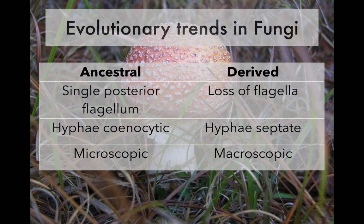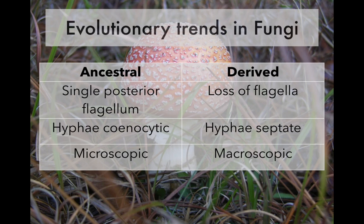There are a number of evolutionary trends throughout the kingdom Fungi. The most ancestral lineages retain that single posterior flagellum that identifies them as members of the Uniconta — which includes choanoflagellates, myxogastrida, and animals. In animals and fungi, that single flagellum points in the posterior direction, so they swim opposite to where the flagellum is located, like a sperm cell swimming toward an egg. In most fungi, however, those flagella have been lost.